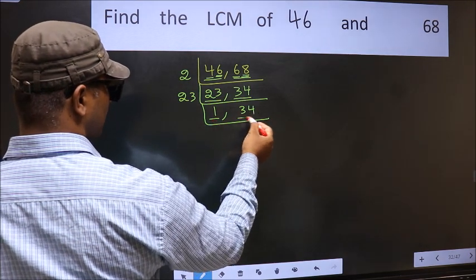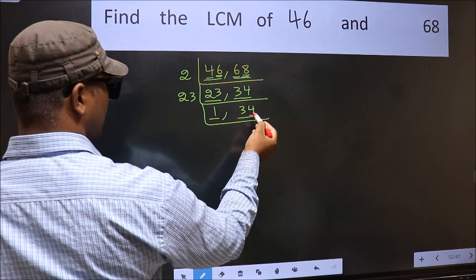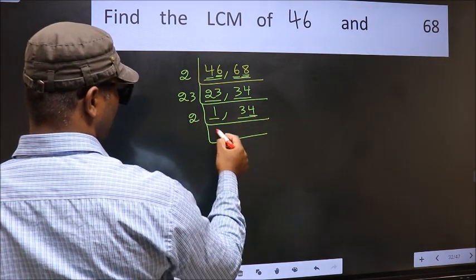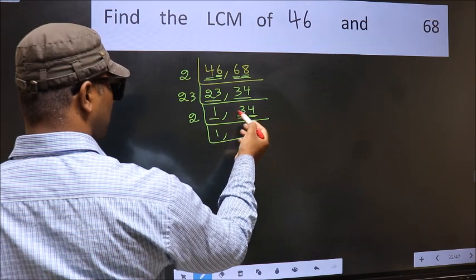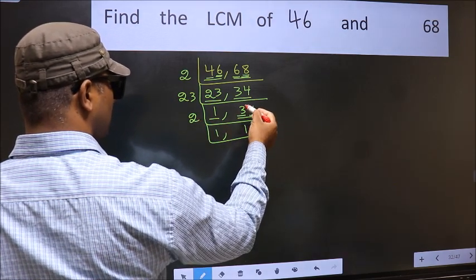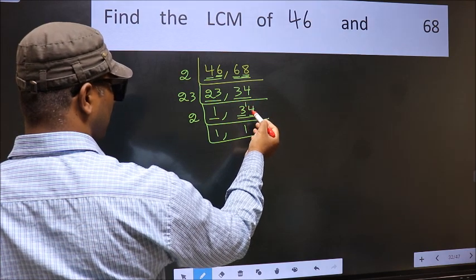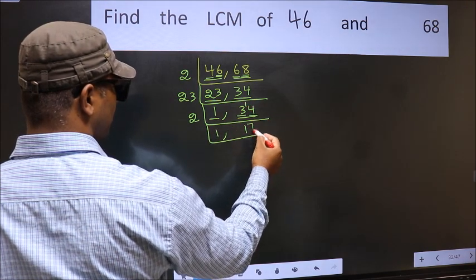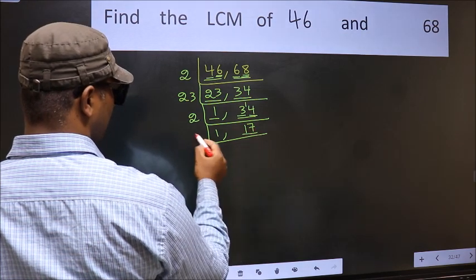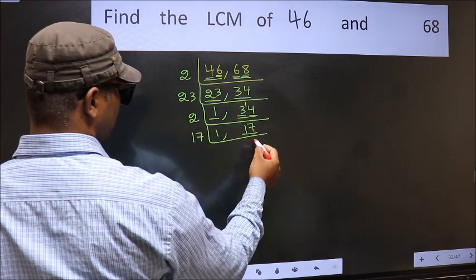So focus on the next number, 34. Last digit 4 is even, so take 2. First number 3. A number close to 3 in 2 table is 2×1 is 2. 3 minus 2 is 1, carried forward 14. When do we get 14 in 2 table? 2×7 is 14. Now here we have 17. 17 is a prime number, so 17×1 is 17.